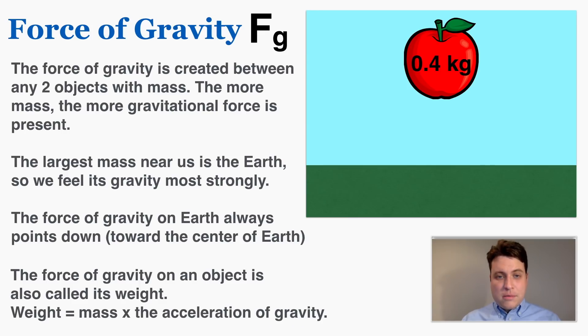The first force we're going to talk about is the force of gravity. This is created between any two objects with mass, and the more mass the more gravitational force is present. The largest mass near us is the earth so we feel its gravity most strongly, and the force of gravity on earth always points straight down toward the center of the earth. The force of gravity on an object is also called its weight. Weight is equal to mass multiplied by the acceleration of gravity.